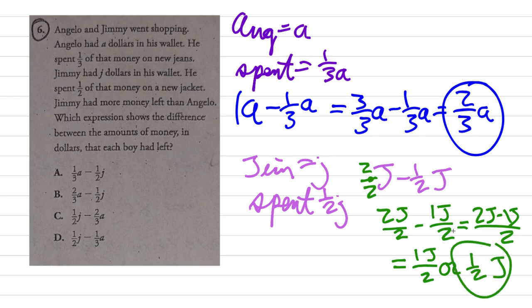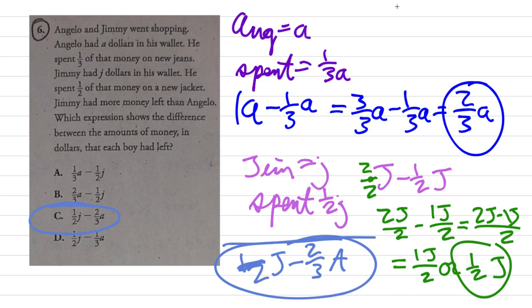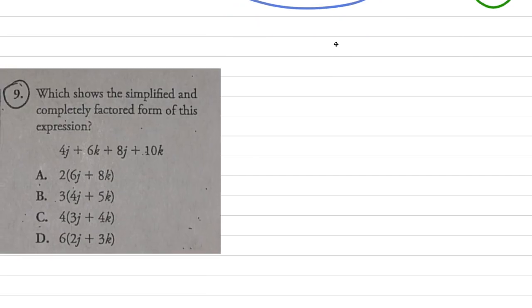Okay, so if Jimmy had more money than Angelo, Jimmy's going to start first. So the final expression is going to be one-half j minus what did Angelo have - two-thirds a. So it's going to be one-half j minus two-thirds a. I'm going to go with option C. Okay, onto the next random problem.